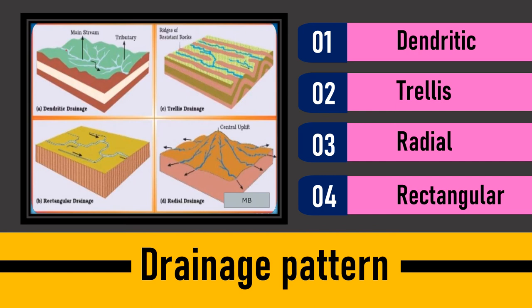The radial pattern shows that streams flow in different directions from a central peak. Looking at the diagram, from the center point the river is bifurcated into different directions — that is the radial pattern. Whenever a river is bifurcated into different channels due to an elevated area situated in between, and it flows out in different directions, it creates a radial pattern.